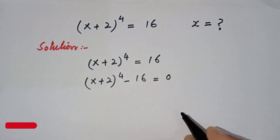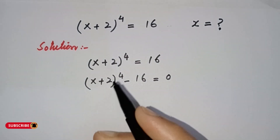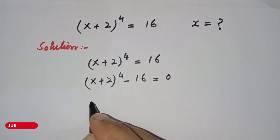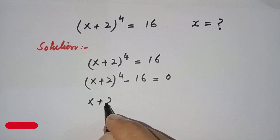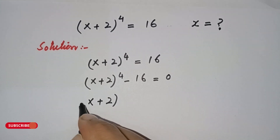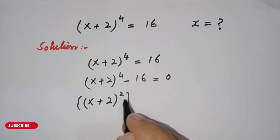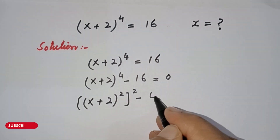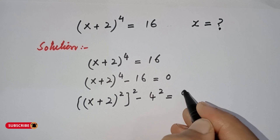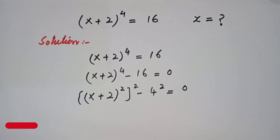This equals 0. Now we will rewrite the power 4 as a square of a square: (x + 2)² whole squared, minus 16, which can be written as 4², is equal to 0.